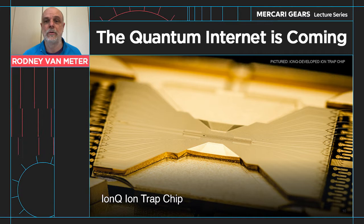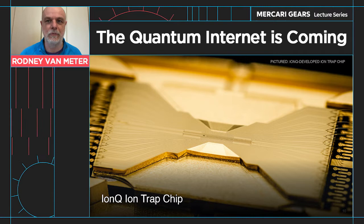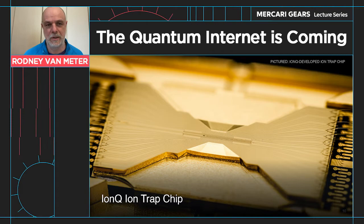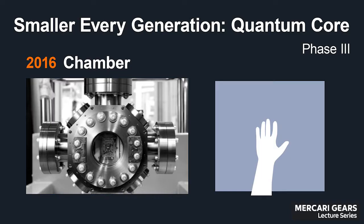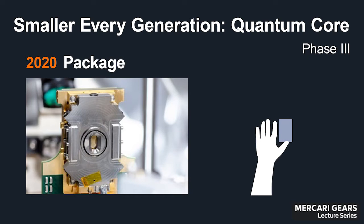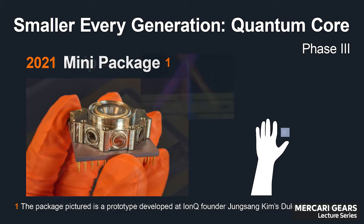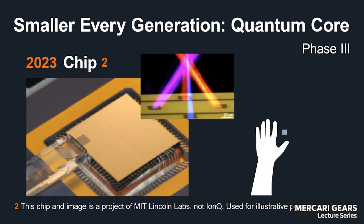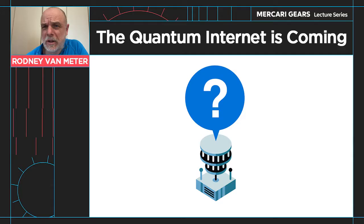So we've got superconducting systems and ion systems — there are other types of physical systems being developed for quantum computers, with dozens being developed around the world. For this particular IonTrap technology, today it goes into a large device, almost the size of the white cylinders I showed you a minute ago. But progressively, the packaging is getting smaller and smaller, and hopefully it will get to the point where the whole system fits inside your hand. Once we have those, we have a great deal more physical scalability — we can put together a lot more devices into a single large system, and it potentially becomes more useful for building out a quantum internet.